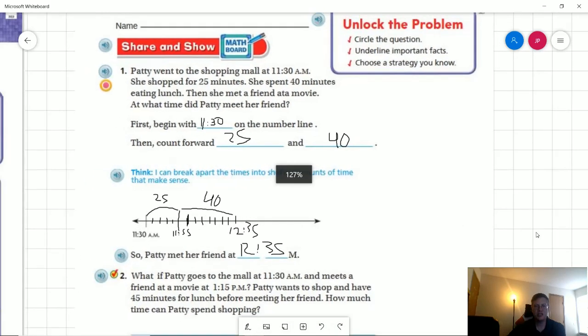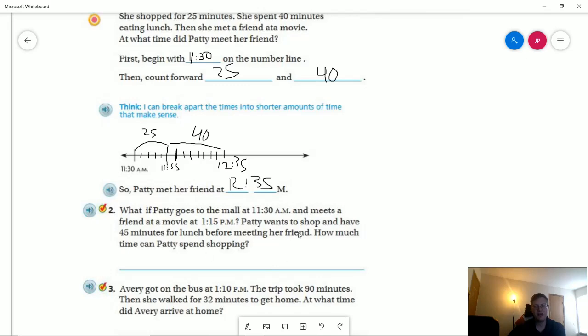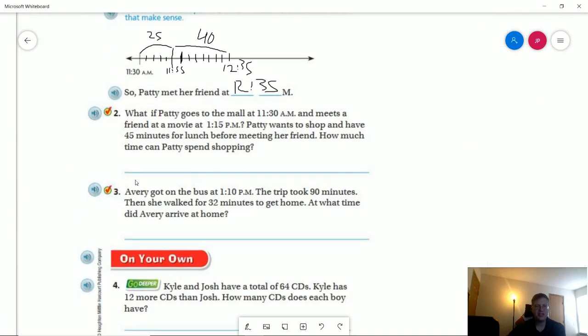Our last question, actually, the second one kind of continues the thought from the first one. The last one that we're going to do is number three. So Avery got on a bus at 1:10 p.m. The trip took 90 minutes, then she walked for 32 minutes to get home. At what time did Avery arrive at home? So if I want to go ahead and make a number line, I can do that. And then I will show you with the number line. I probably should be using my ruler to help me with this.